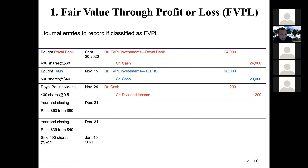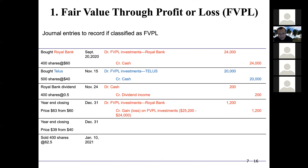Year end, December 31st: the Royal Bank share price went up by $3, from $60 to $63. What's the journal entry? Debit FVPL investment for $3 times 400 shares, and credit gain on FVPL investment. Because the value is increasing, you debit the investment. $3 per share times 400 shares equals $1,200. Credit the gain on the FVPL investment.